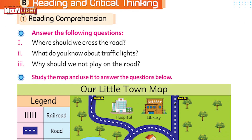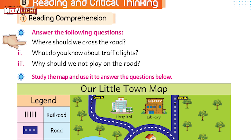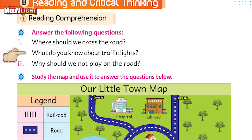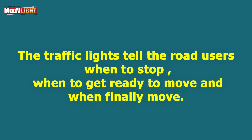Where should we cross the road? Think carefully, recall the text and tell me. The answer is: we should cross the road only at a zebra crossing. What did you learn about the traffic lights? The traffic lights tell road users when to stop, when to get ready to move, and when to finally move.